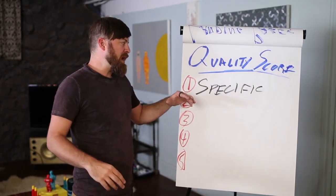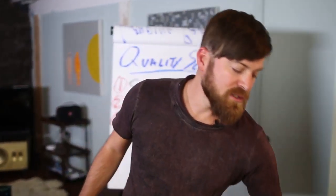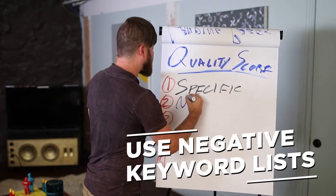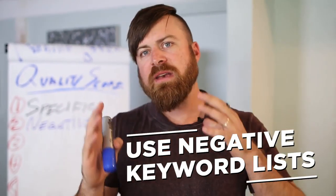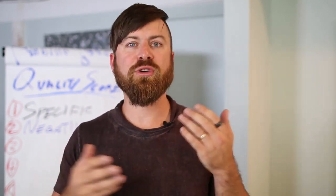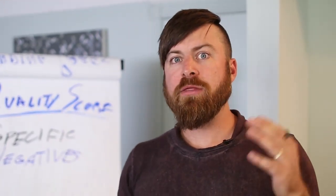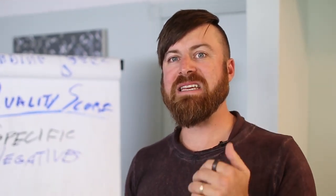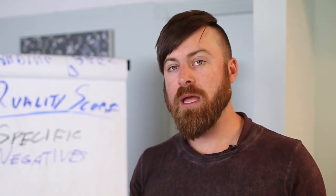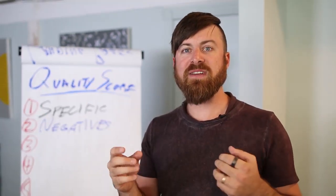The second tip to increase my quality score is make a lot of use of negative keyword lists. Negative keywords are letting people know what you're not looking for. In my previous example, somebody might be searching for a 32-inch LED TV. The negative keyword for that would be 32-inch LED TV repair or 32-inch TV manual or 32-inch TV parts.